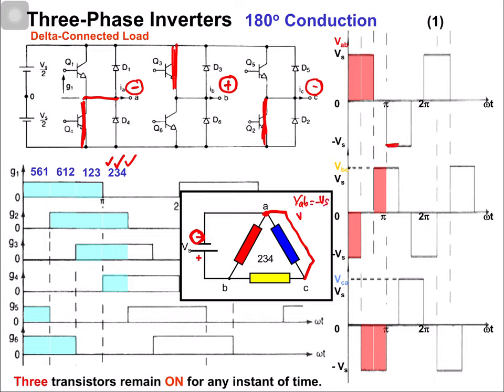Continuing from the fourth switching state: vbc = +Vs and vca = 0.